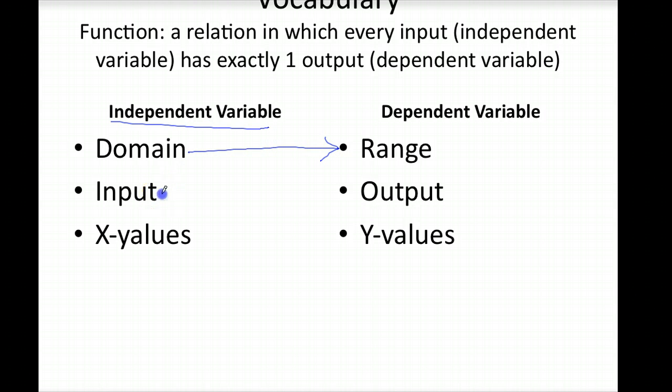Our independent variable will always be our input. Our dependent variable will always be the output. Our independent variable will always be our x values, and our dependent variable will always be our y values. Going back to when we looked at independent and dependent variables, your y value depends on your x value, and every x value will only have one particular unique y value.